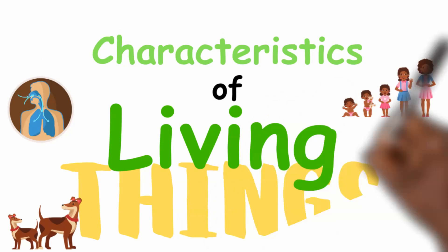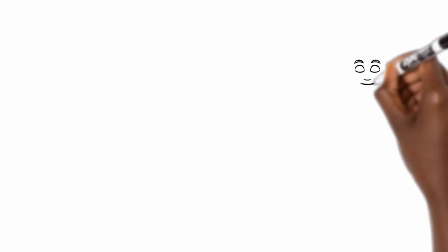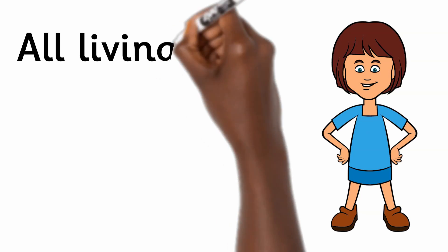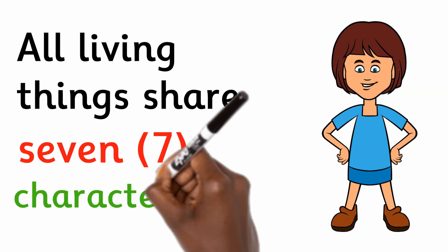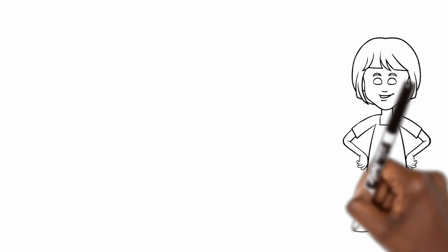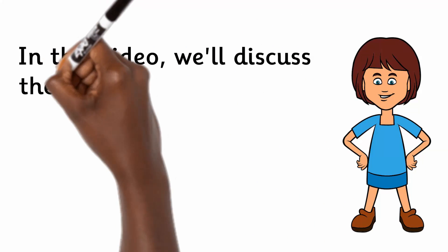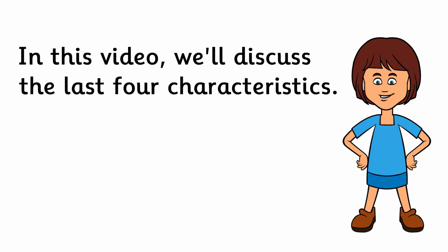Today, we're going to continue our talk about the characteristics of living things. All living things share seven characteristics. In this video, we'll discuss the last four characteristics.